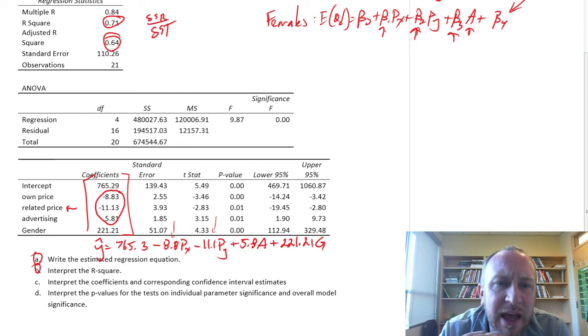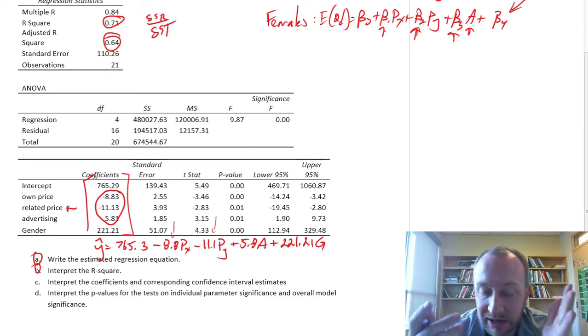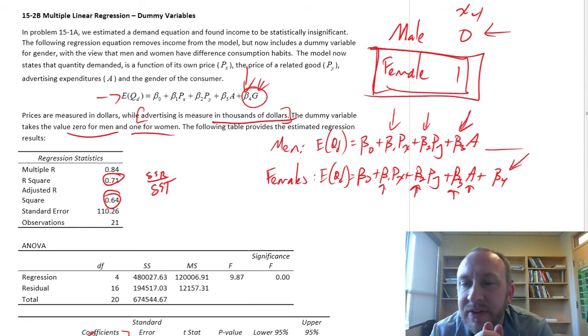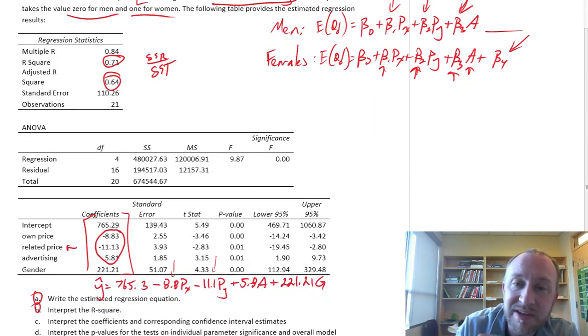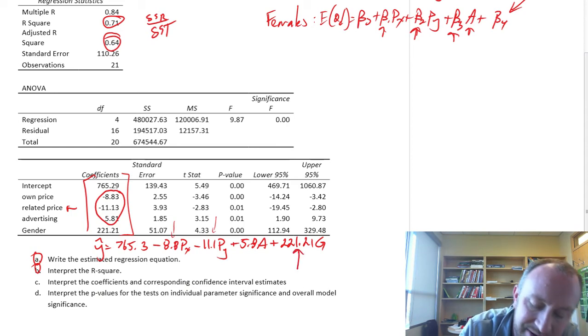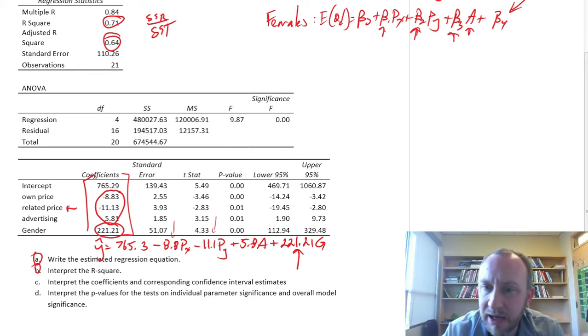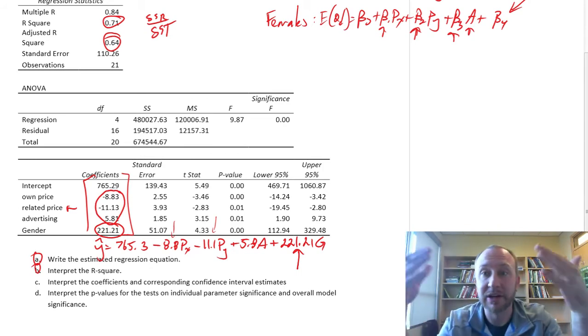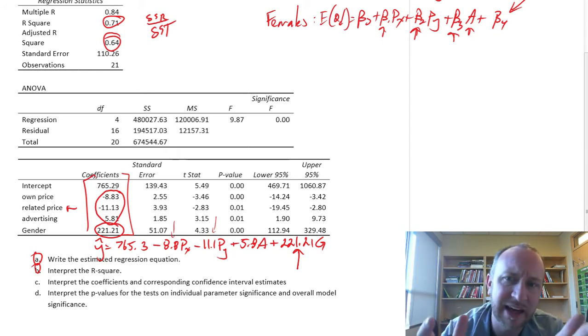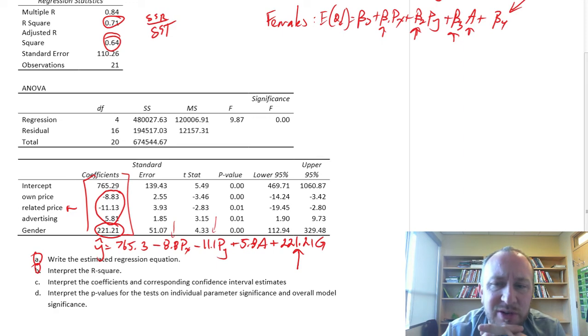This coefficient now just tells us what's the average difference in quantity demanded between men and women. If you're a female, because that's the category that has the dummy variable equal to 1, a female given any set of prices, any set of advertising expenditures, women will demand 221.2 units more on average than men. There's no each additional unit of gender. It's the difference, the average difference between men and women.